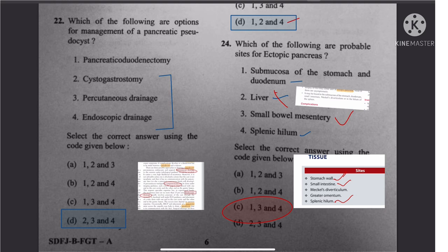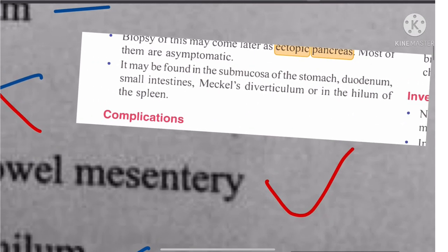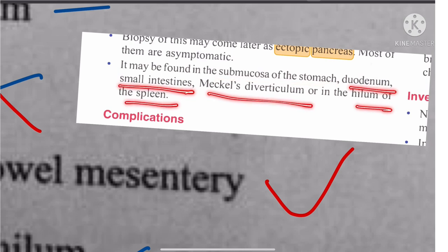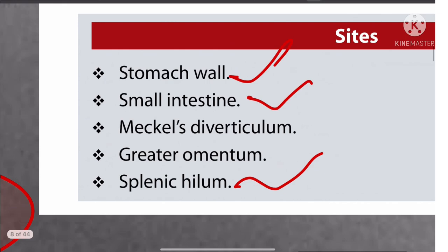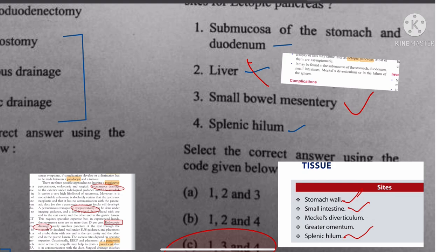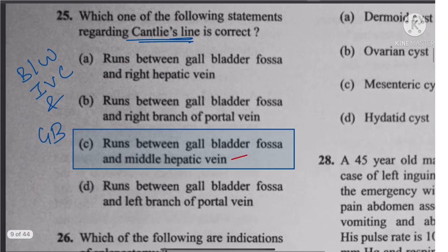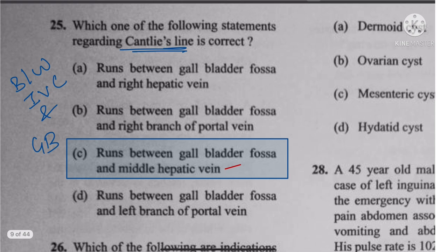Question 24: Ectopic pancreas — from two different books (Bailey and Love, and another reference), the locations mentioned are submucosa of the stomach, duodenum, small intestine, Meckel's diverticulum, hilum of the spleen, and greater omentum. Liver is not mentioned in either book. So the answer is 1, 3, and 4.